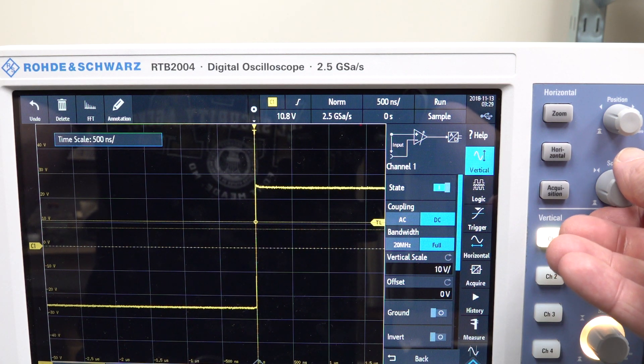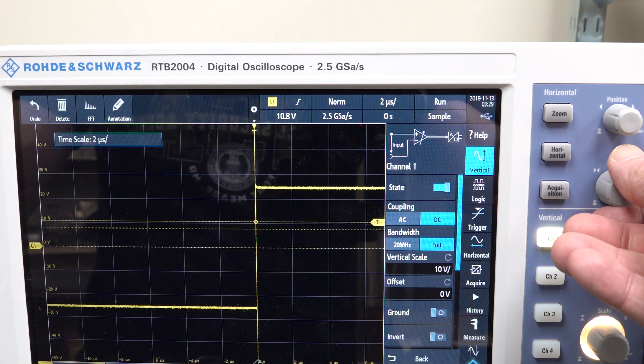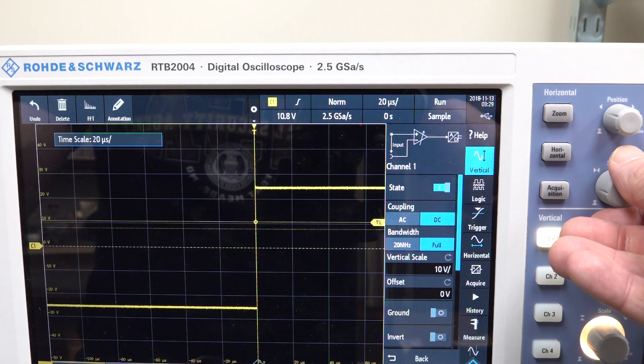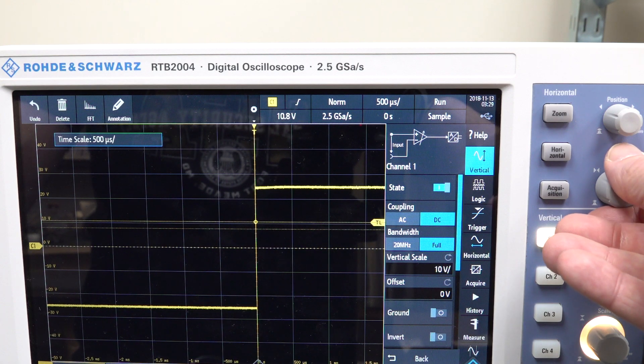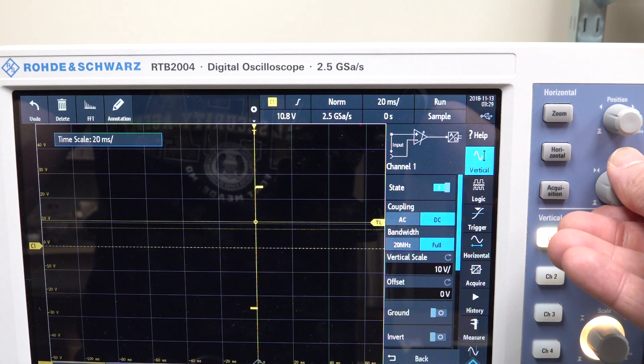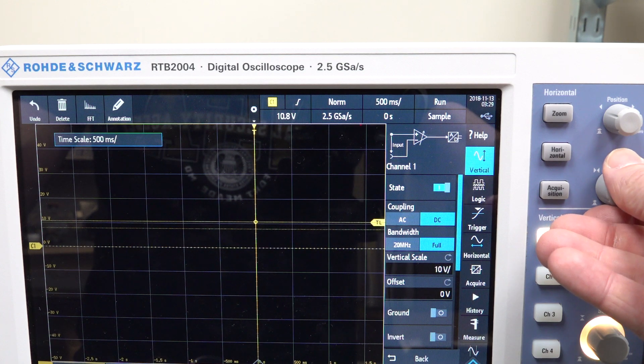Why? And then it goes back to 5, and then the rest of the time base sequence is 1, 2, 5 sequence all the way up to like 500 seconds or something.